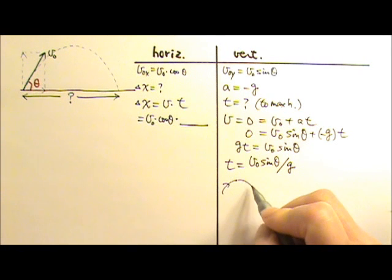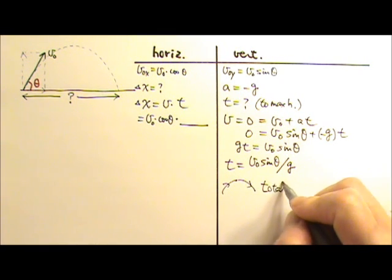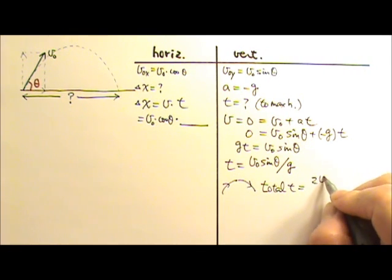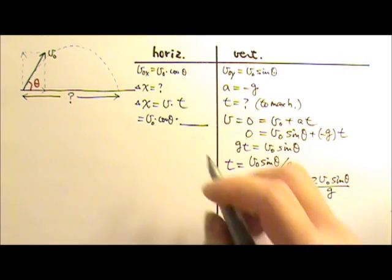So if I go up and down, the time would be, the total time is twice that much. Twice the V₀ sine theta divided by G. And that's the time I am going to use for this side.